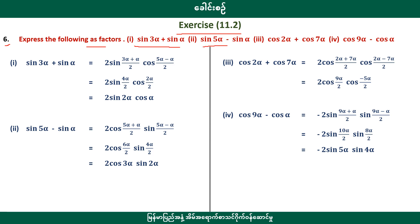Sine 5 alpha minus sine alpha, plus cosine 2 alpha, plus cosine 7 alpha, plus cosine 9 alpha, minus cosine alpha, plus sine 9. Sine 5 minus sine 5, sine 5 minus sine 4.